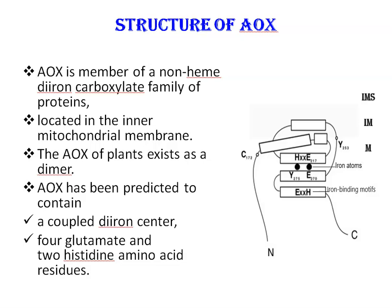The plant AOX is an interfacial membrane protein of approximately 32 kDa, oriented toward the matrix side of the inner membrane — matrix, inner membrane, and intermembrane space. AOX couples the oxidation of ubiquinol to the four-electron reduction of oxygen to water. AOX in plants exists as a dimer and is post-translationally regulated by alpha-ketoacids and succinate. AOX has a non-heme di-iron carboxylate structure.